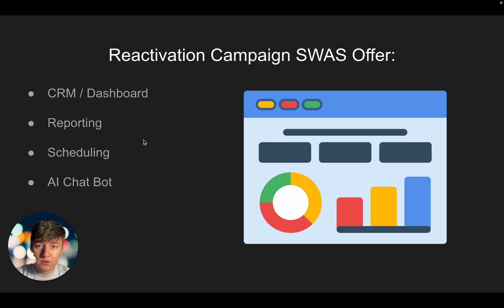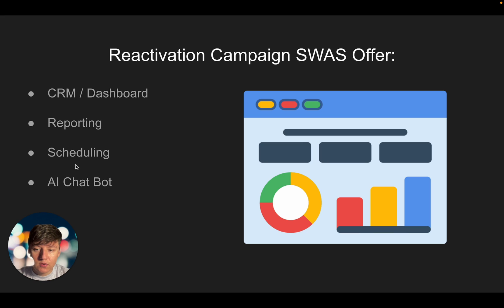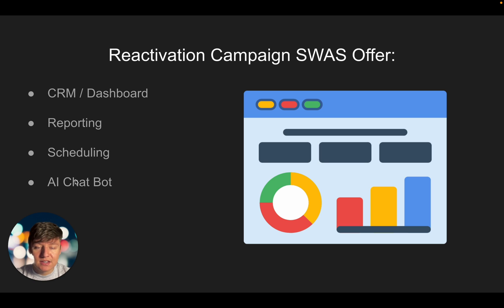On top of this quarterly service, you include software features — this is the database reactivation SWaaS offer. First, a CRM/dashboard so they can track lead progression, see how many leads they've closed or are still open, and how much revenue they're generating, plus reporting. You can include scheduling so reactivated leads can book appointments through your software. You can also include an AI chatbot that responds to leads and aims to get them to book an appointment with the business.